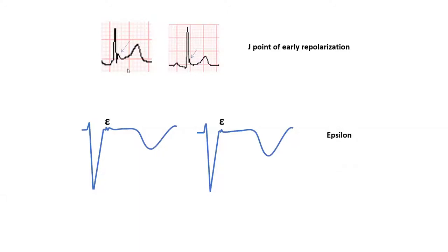Distinguish the J-point from the epsilon wave — they tend to be in the same neighborhood. The J-point is at the junction between QRS and ST, and can be fat, notched, slurred, or a demarcated point. The epsilon wave, seen in ARVD, is a twitch a little bit past the J-point — not a fat wave or a notch, but a twitch past the J-point. In ARVD, the most sensitive feature is not the epsilon wave; it's a negative T wave in the precordial leads.